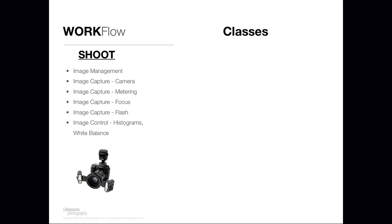Then I talk about image control — how do you know that you're getting all those things right in camera? One tool is called a histogram; I teach how to read them, what they are, and how to use them effectively. White balance is another big part and it ties into the color management piece — how do you get accurate color in camera so you're not tweaking it after the fact? A lot of classes say just fix it later in Photoshop, but that's not an efficient way to do it and it eats into your bottom line. We want to get it all right in camera every time.